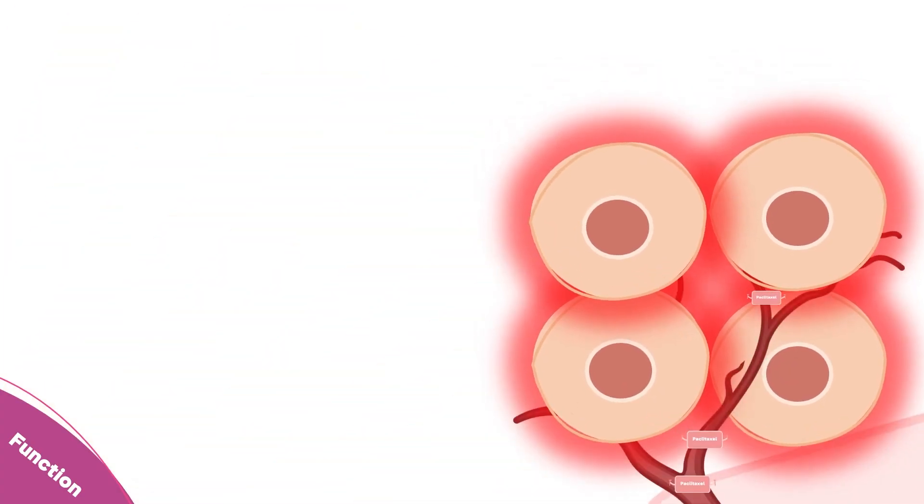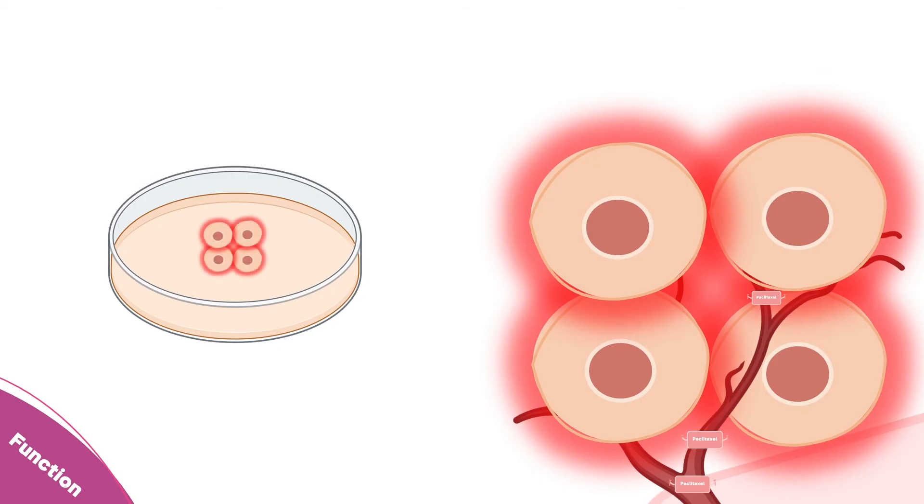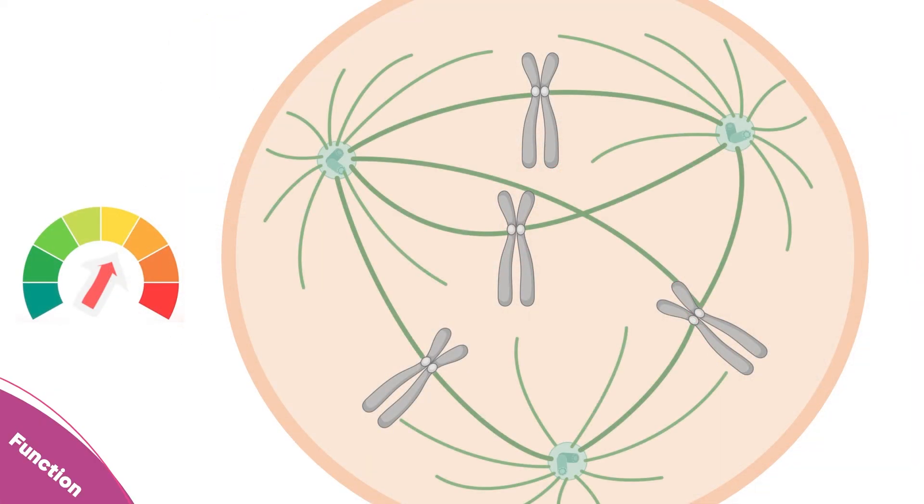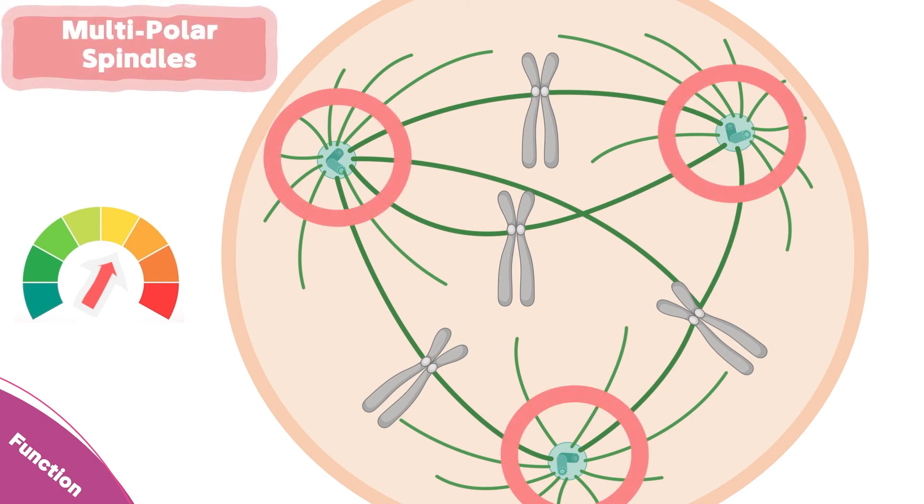In comparison with the petri dish in which paclitaxel is directly administered to the cells, a difference of effective concentration was observed. This difference in concentration led to the formation of more than two centrioles in a phenomenon called multipolar spindles.